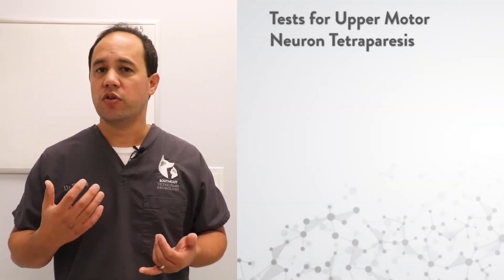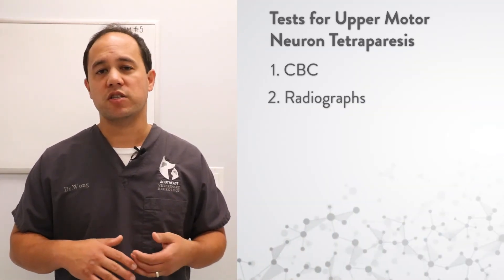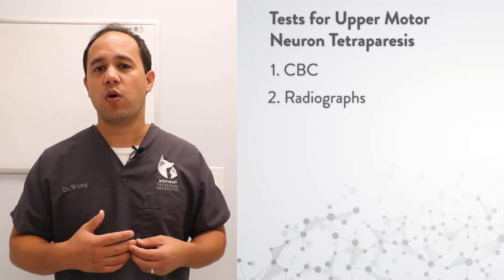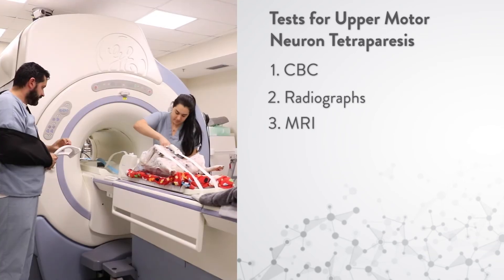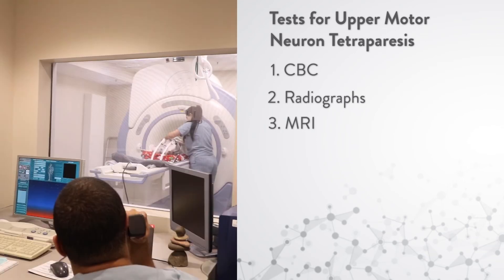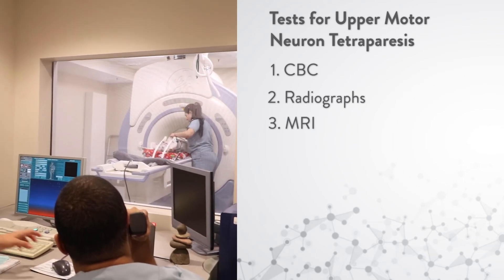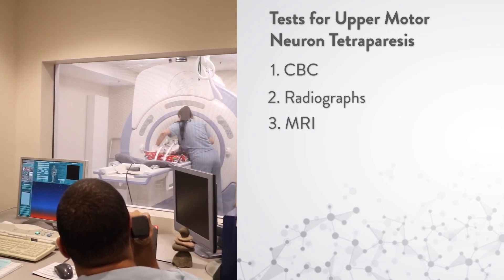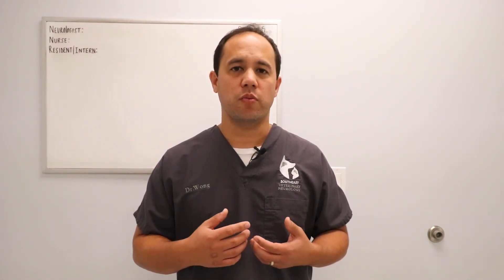Tests for dogs with upper motor neuron non-ambulatory tetraparesis include blood work and x-rays, but typically require an MRI of the neck to diagnose things like intervertebral disc disease, trauma, infection, fibrocartilaginous embolism, spinal cord tumor, and meningitis.